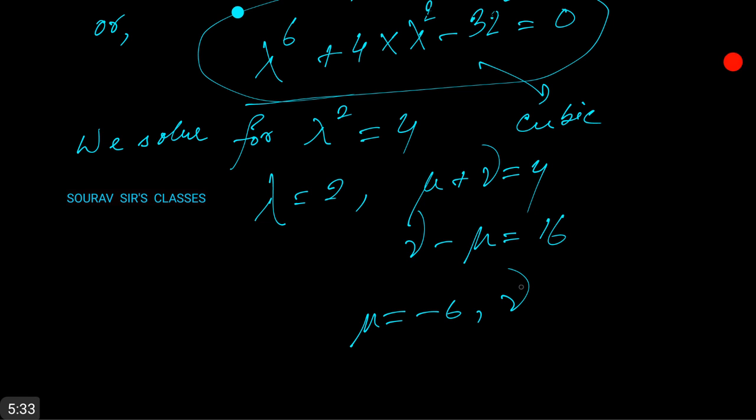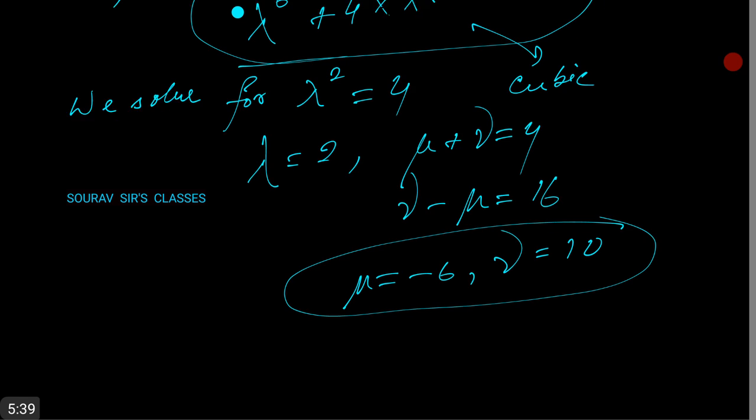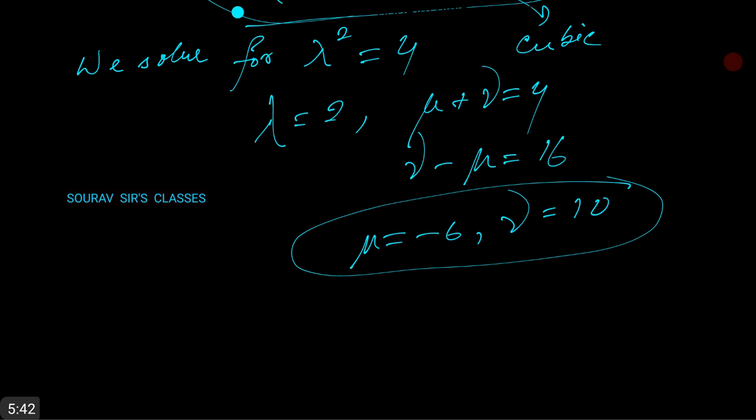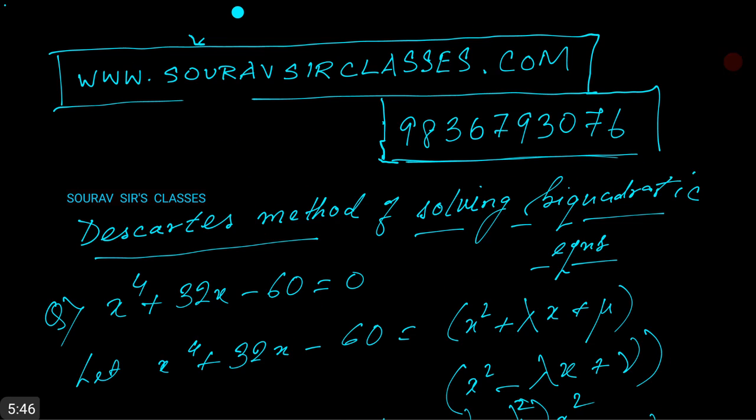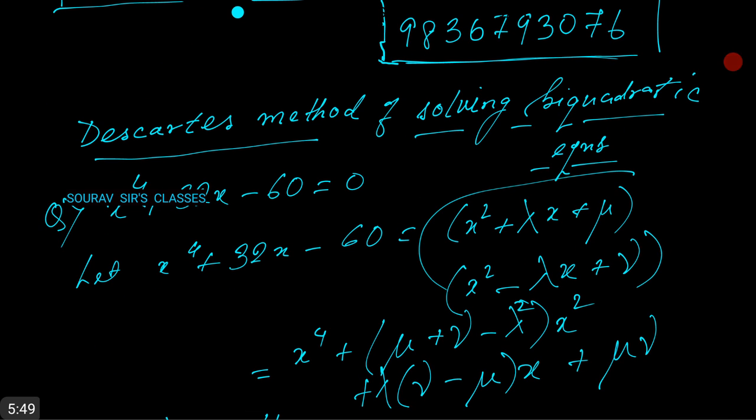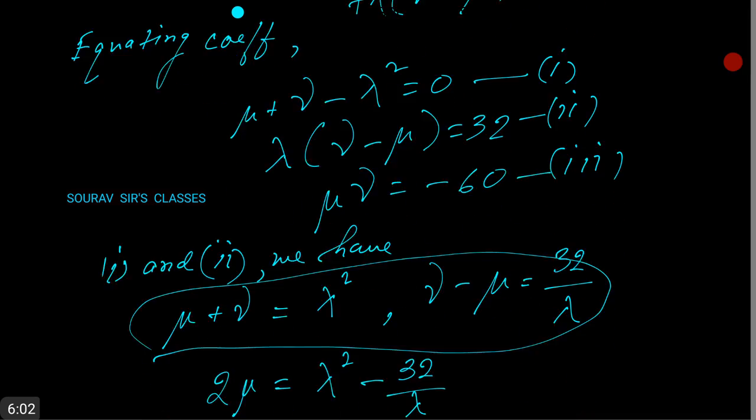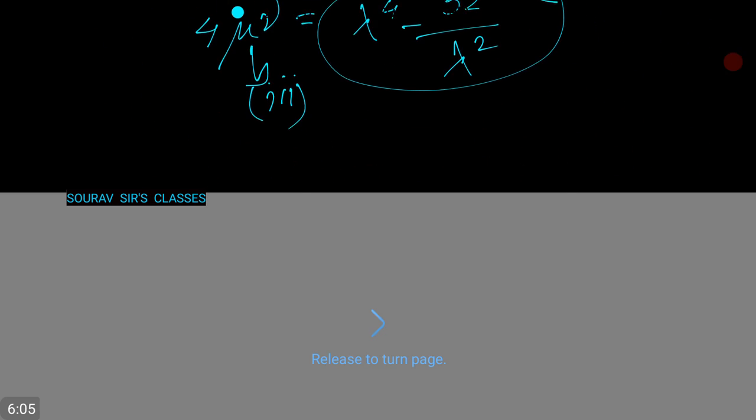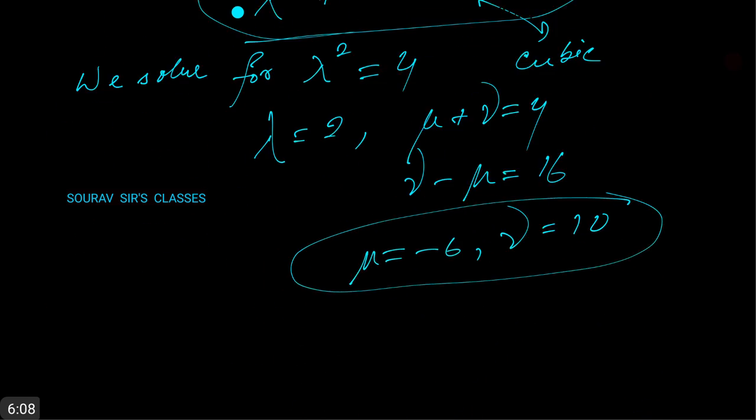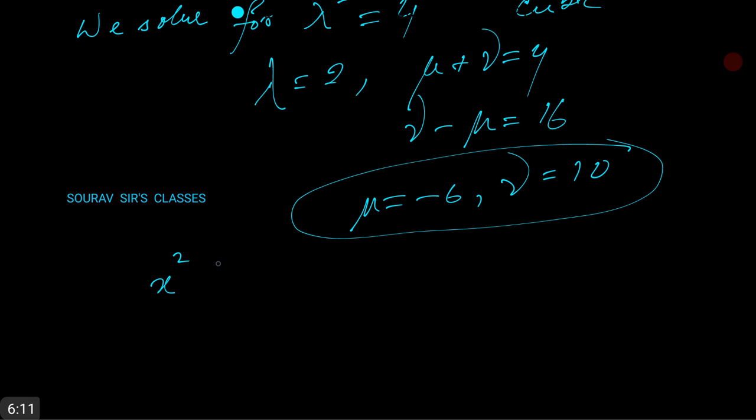Thus, the quadratic equations are—we had decomposed that biquadratic into 2 quadratics, and we have got the value of lambda, mu, nu. So we just substitute those values and we will get something like x squared plus 2x minus 6 equals to 0 and x squared minus 2x plus 10 equals to 0.